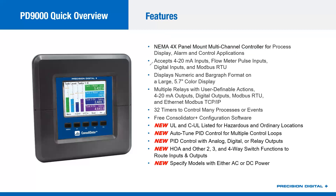It accepts 4 to 20 milliamp inputs, flow meter pulse inputs, digital inputs, and it is a Modbus device that can be a master, slave, or snooper. It has a great-looking display, with lots of relay, analog, and digital output possibilities. Ethernet for Modbus TCP/IP capabilities is great for integrating into an existing SCADA system. All sorts of timer capabilities are included — for example, to time how long a loading process takes or how long an alarm is on — and all of that is programmed via free Consolidator Plus configuration software.